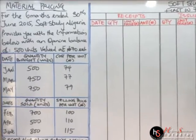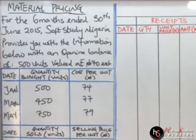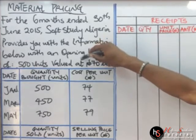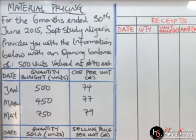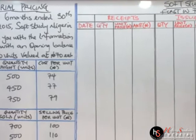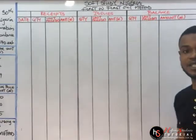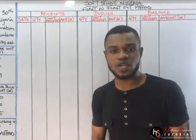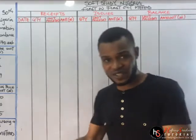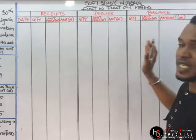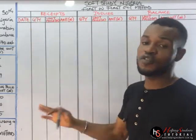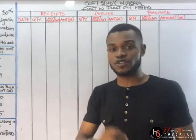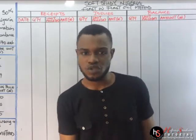It says for the six months ended 30th June 2015, South Study Nigeria provides you with the information below with an opening balance of 500 units valued at 70 naira each. From the introductory video, I've explained to us how we go about this. First of all, remember your table. If you don't know how to present this table, you will definitely find it difficult to answer a question. Irrespective of the format you are going to make use of, the table remains the same.